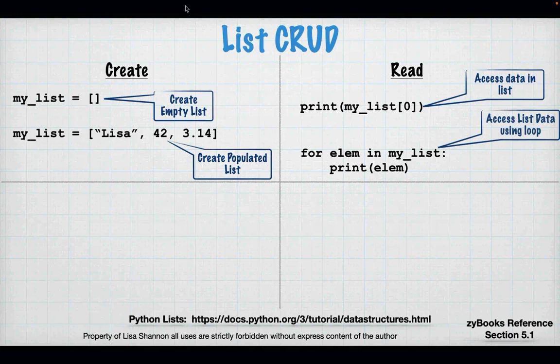Another way to access list data is in a loop. You can have a for loop — all you have to do is say 'for elem in my_list'. The 'for' and 'in' keywords are made to work on ranges, and a list is a range because it has that index value. In two lines you can roll through a list of any length and print out anything you want.